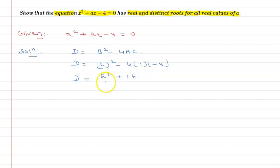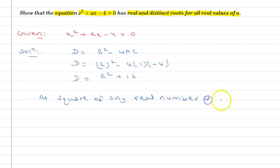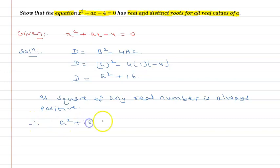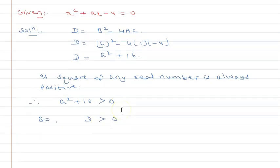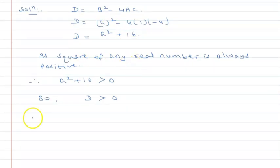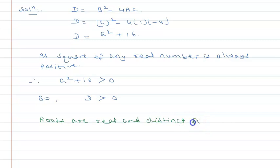Now, a is a real number, so its square will always be positive. As the square of any real number is always positive, therefore a squared plus 16 will be greater than 0. So I can say that the discriminant will be greater than 0, and since D is greater than 0, the roots are real and distinct for all real values of a.